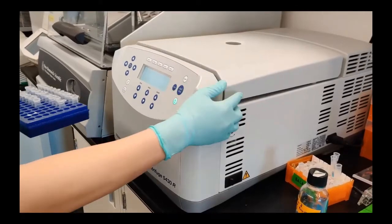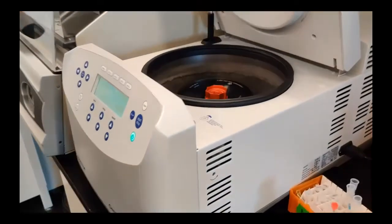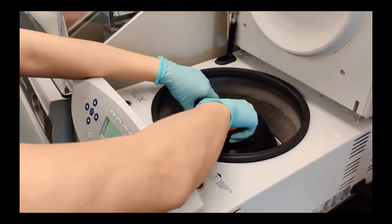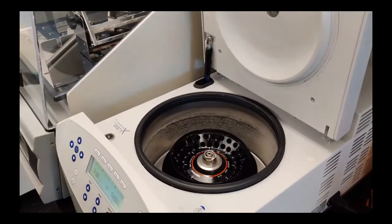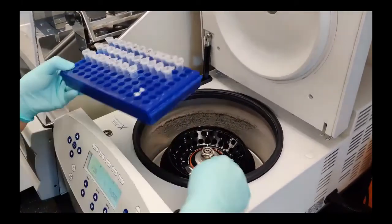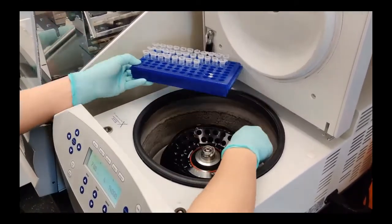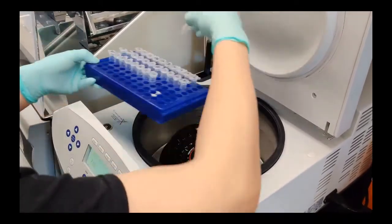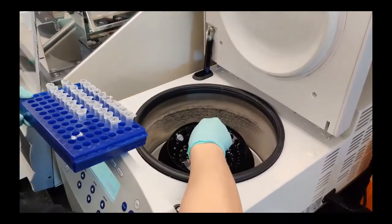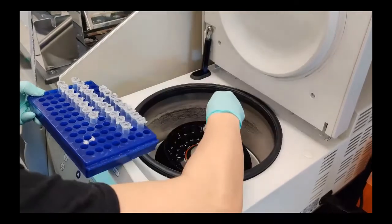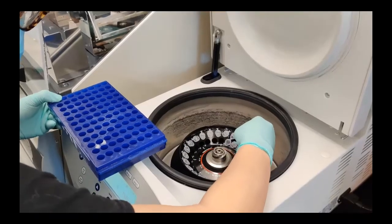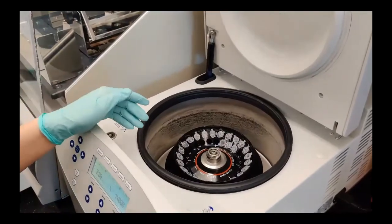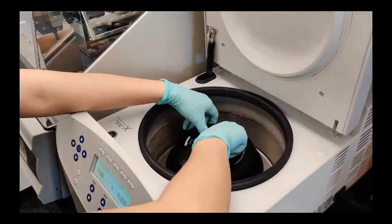Next, we spin the samples very fast in a machine called a centrifuge to collect any condensation on the sides of the tubes. Here, we're putting the samples inside the centrifuge. All the samples are now inside the centrifuge. Now, let's close it up and get it started!